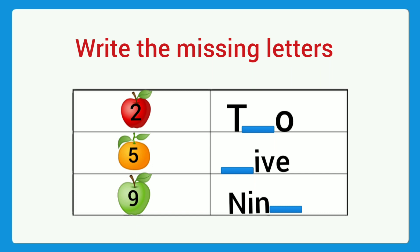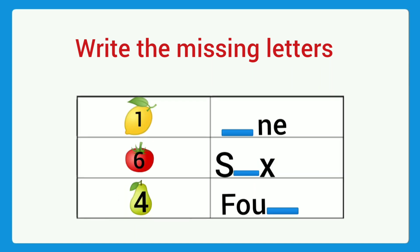Next: five — which is the first letter? F. F-I-V-E, five. Next: nine — which letter is missing here? N-I-N-E. Next: number is one — which is the first letter? O. O-N-E, one. Next: six — S-I-X, six.